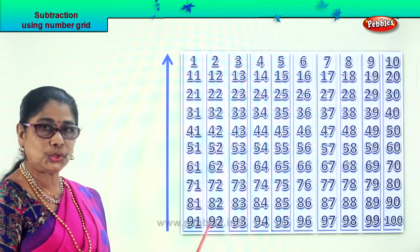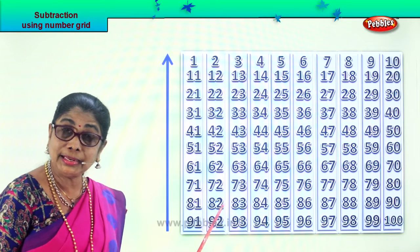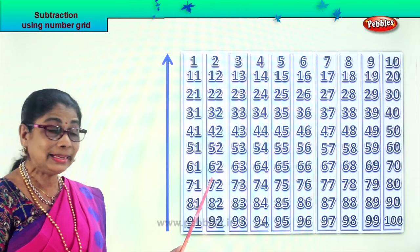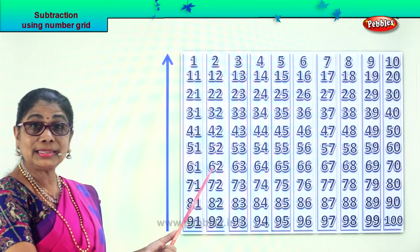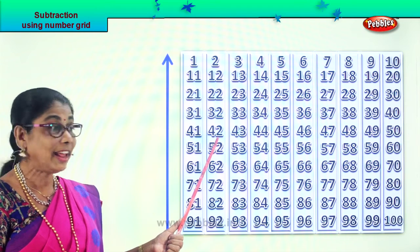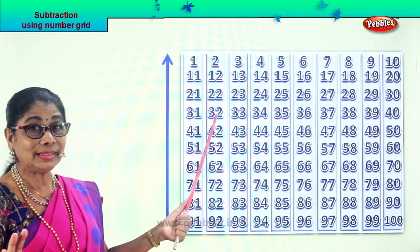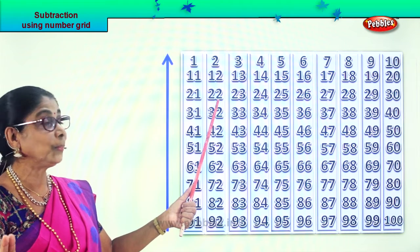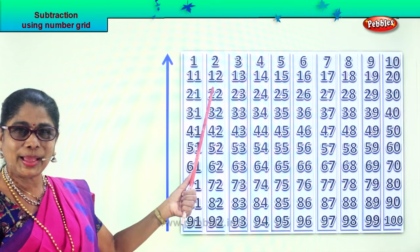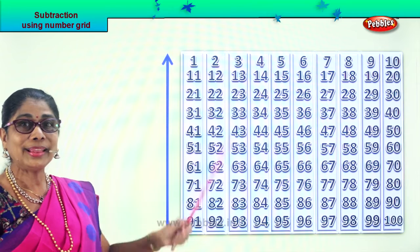Now let's look at 92. 92 take away 10, you get 82. 82 take away 10, you get 72. 72 minus 10 — 62. 62 minus 10 — 52. 52 minus 10 — 42. 42 minus 10 — 32. 32 minus 10 — 22. 22 minus 10 — 12. 12 minus 10, you get 2. Very good!